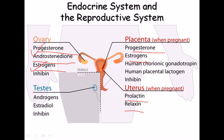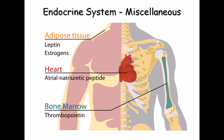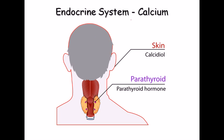In males, the testes secrete testosterone and estradiol, as well as inhibin. In the adipose tissue, leptin is secreted in both males and females, and estrogen is secreted in females. The heart secretes atrial natriuretic peptide. Bone marrow secretes thrombopoietin.